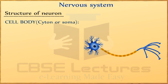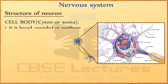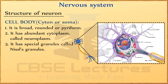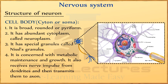Cell body: The cell body of a neuron is called cytone or soma. It is broad, rounded or pyriform. It has abundant cytoplasm called neuroplasm. It has special granules called Nissl's granules. It is concerned with metabolic maintenance and growth. It also receives nerve impulse from dendrites and then transmits them to the axon.